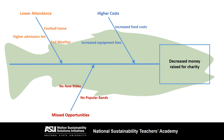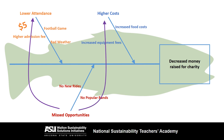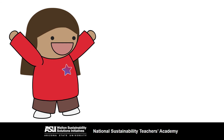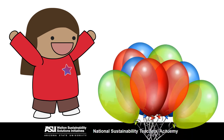Now that I have an organized picture of what went wrong, we can develop solutions that target particular parts of the problem. For example, one possible solution would be to lower the admission fee back to $5, which would help increase attendance. We can also see the parts of the problem that are interrelated — notice that the missed opportunities, like bringing in new rides and popular bands, would probably improve attendance but could also increase costs. Visualizing the problem using a fishbone diagram helps us identify and avoid unintended consequences, and helps me understand the complex problem to make the sustainability fair better next year.